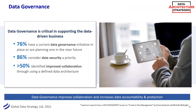Dataversity and I work together every year on a survey on data governance trends. I always find it interesting — and not surprising — that data governance is consistently among the top priorities of organizations. Over 76% already have a data governance program in place or are planning one. 86% consider data security, which is kind of the little brother of data governance. And over half identified that collaboration was a big part of using a defined data architecture. Architecture is kind of the left hand of data governance — they really fit together.